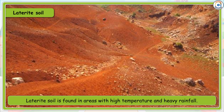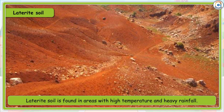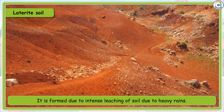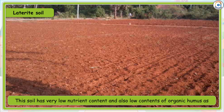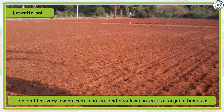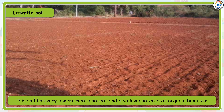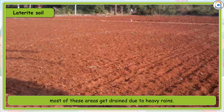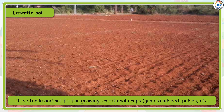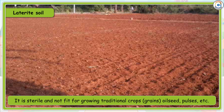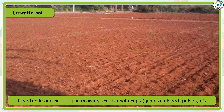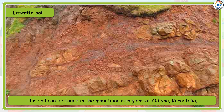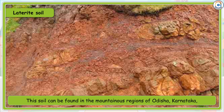Laterite soil is found in areas with high temperature and heavy rainfall. It is formed due to intense leaching of soil due to heavy rains. This soil has very low nutrient content and low organic humus content, as most nutrients get drained due to heavy rains. It is sterile and not fit for growing traditional crops like grains, oilseeds, pulses, etc.